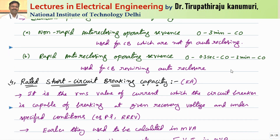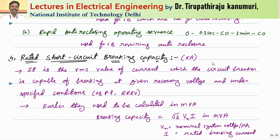This non-rapid type is used for circuit breakers not designed for auto reclosing, and costs less. The second type is the rapid auto-reclosing sequence: O — 0.3 seconds — CO — 3 minutes — CO. After opening, the circuit breaker can reclose within 0.3 seconds. If the fault persists and it opens again, it must wait three minutes before the next close attempt. This type is used in extra-high-voltage transmission systems where auto reclosing is needed, since transient faults typically clear on the first reclose.